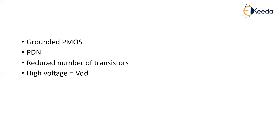But what is the Pseudo-NMOS style? In your Pseudo-NMOS style, we will be having a pull-down network, and in the place of your NMOS with gate connected to source, we will be replacing it with a grounded PMOS. The gate of your PMOS will be connected to ground. That grounded PMOS followed by your PDN will give you the Pseudo-NMOS logic style — that is, false NMOS logic style.